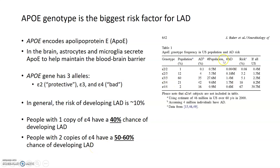You can see this in this chart here. Individuals who are E2-E2, or have two copies of the E2 allele, actually have extremely low risk of developing Alzheimer's disease. Whereas somebody who has two copies of the E4 allele, an E4-E4 individual, has a huge risk of developing late-onset Alzheimer's disease. You can see here the prevalence of these genotypes in the population. The most common by far is the E3-E3 allele, which is the neutral phenotype and does not necessarily contribute to risk for developing Alzheimer's either way.